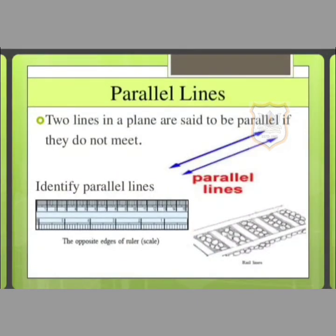Our next topic is parallel lines. Two straight lines are said to be parallel to each other if they lie in the same plane and do not meet, even when produced up to any extent on either side. Two lines in a plane are said to be parallel if they do not meet.